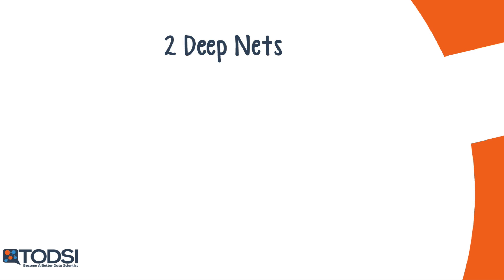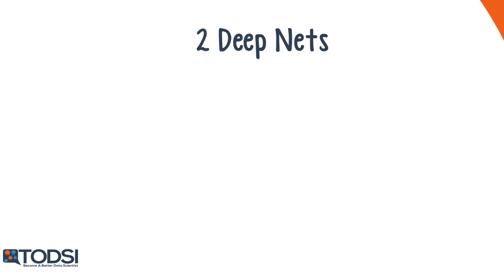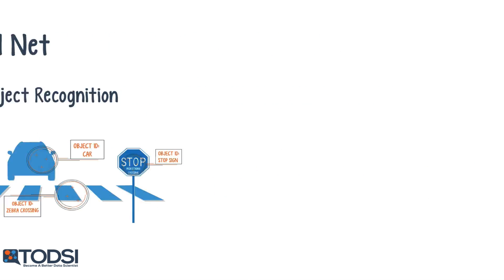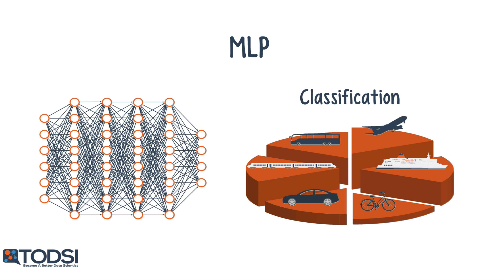GraphLab offers two different types of deep nets, depending on the nature of your input data. If you supply GraphLab with image data, the default selection will be a convolutional net. With any other kind of data, the default is a multilayer perceptron.